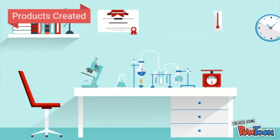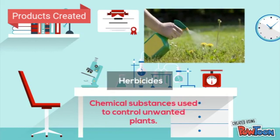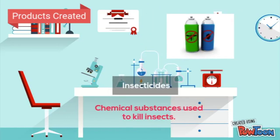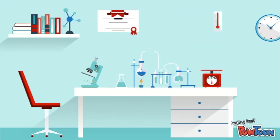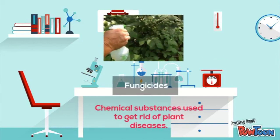So some of the products created in this field include herbicides, which are chemical substances used to control unwanted plants, and these include weeds. Next would be insecticides, which are chemical substances used to kill insects like bugs on plants. Another product would be fungicides, which are chemical substances used to get rid of plant disease.